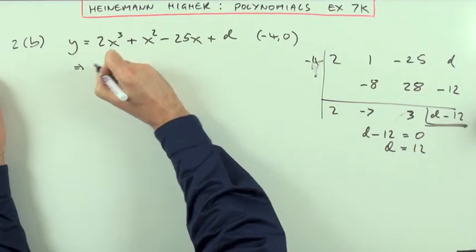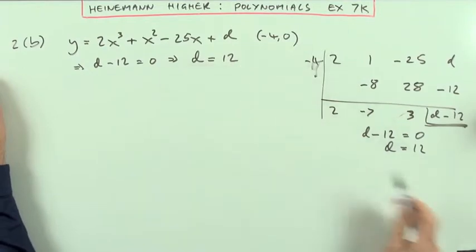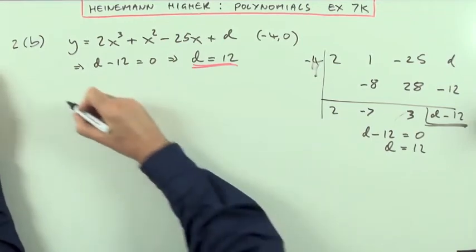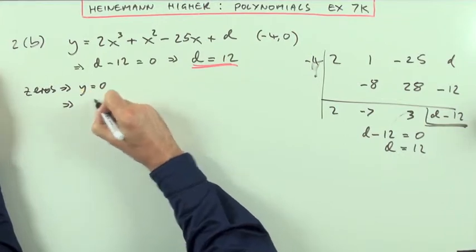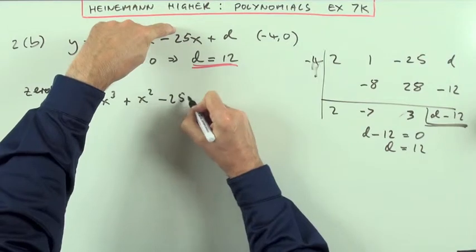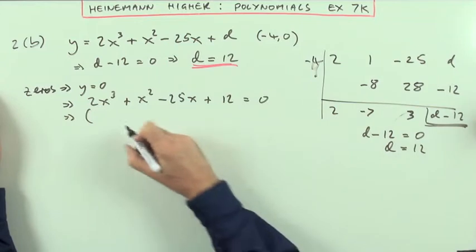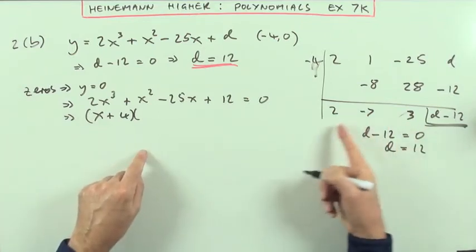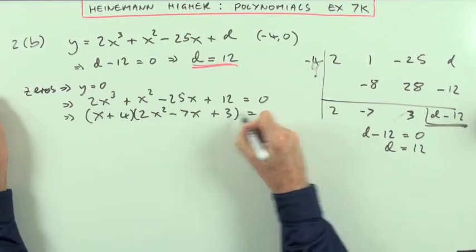I'll put that over here. That means that d minus 12 should equal 0, which means that d equals 12. That was the first bit, what's the value of d. And the second bit is, what are the other zeros. Well, the zeros mean that y should be zero, which means that 2x cubed plus x squared minus 25x plus 12 should equal 0. And I've already got all the factorization there, from that synthetic division. I've got x plus 4 was one of the factors, and the quotient gives the remaining factor, 2x squared minus 7x plus 3 equals 0.